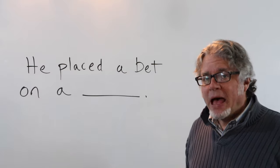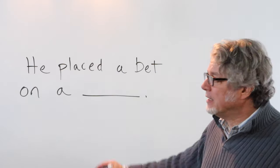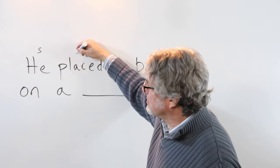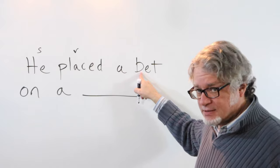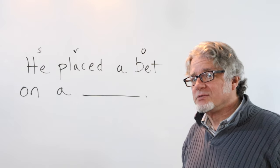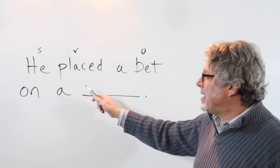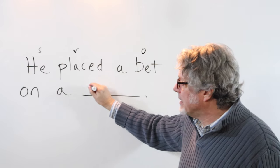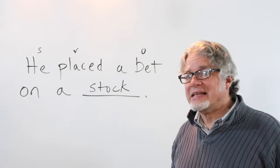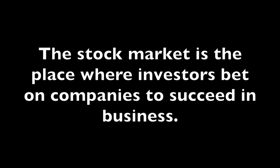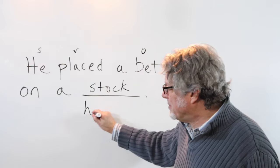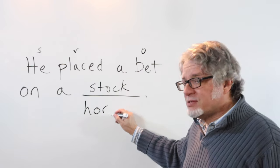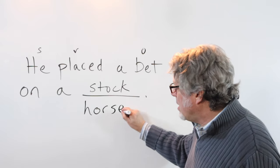In this sentence, bet is a noun. Here's the subject, this is a verb, this is the noun. It's an object in the sentence. He placed a bet on a... And then here would be the thing: on a stock in the stock market. Or when gambling, he placed a bet on a horse.